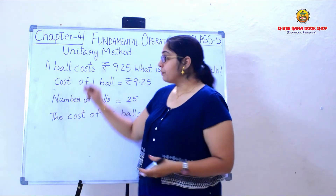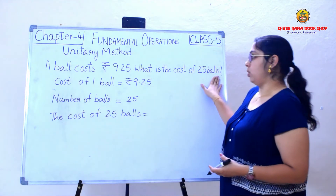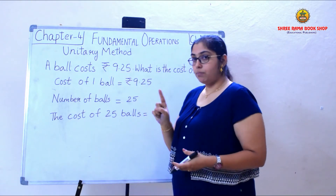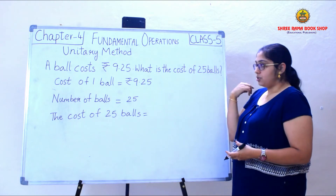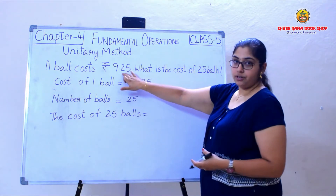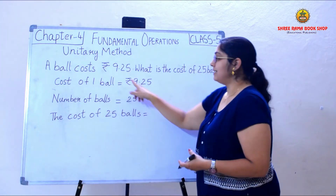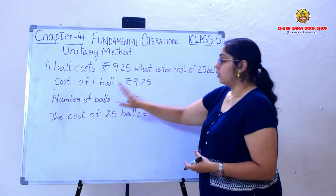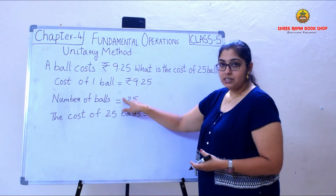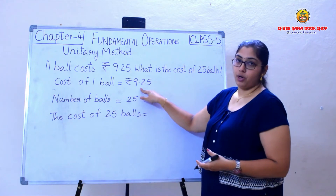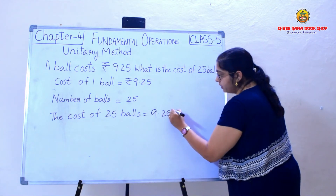On the board I have an example: a ball costs Rs. 9.25. What is the cost of 25 balls? The cost of one ball is Rs. 9.25, and we need to find the cost of 25 balls. To find out, I need to multiply 9.25 by 25.